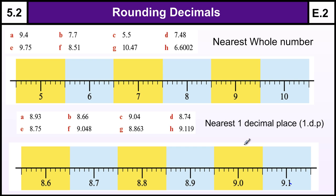Level 5 Grade E Rounding Decimals. Now we are going to look at the nearest whole number and then the nearest one decimal place or 1dp as it's called.